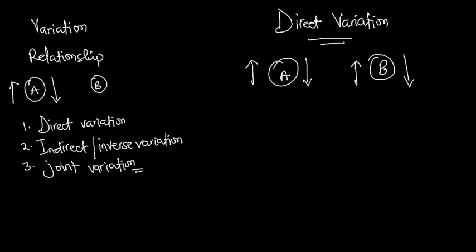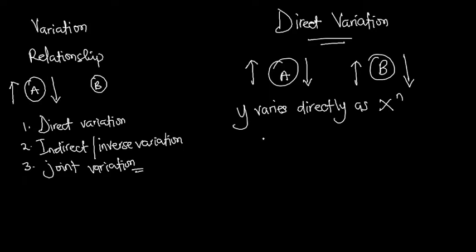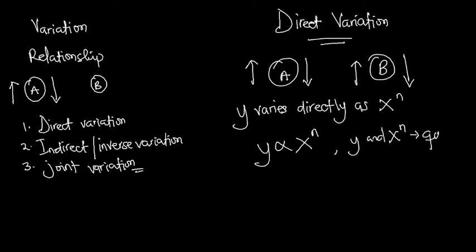Now let's look at how to represent direct variation mathematically so you can apply it in solving practical questions. Assuming we have the statement 'y varies directly as x to the power n', we express this mathematically by writing y ∝ x^n. Here, y and x^n are our two quantities whose relationship we are expressing.